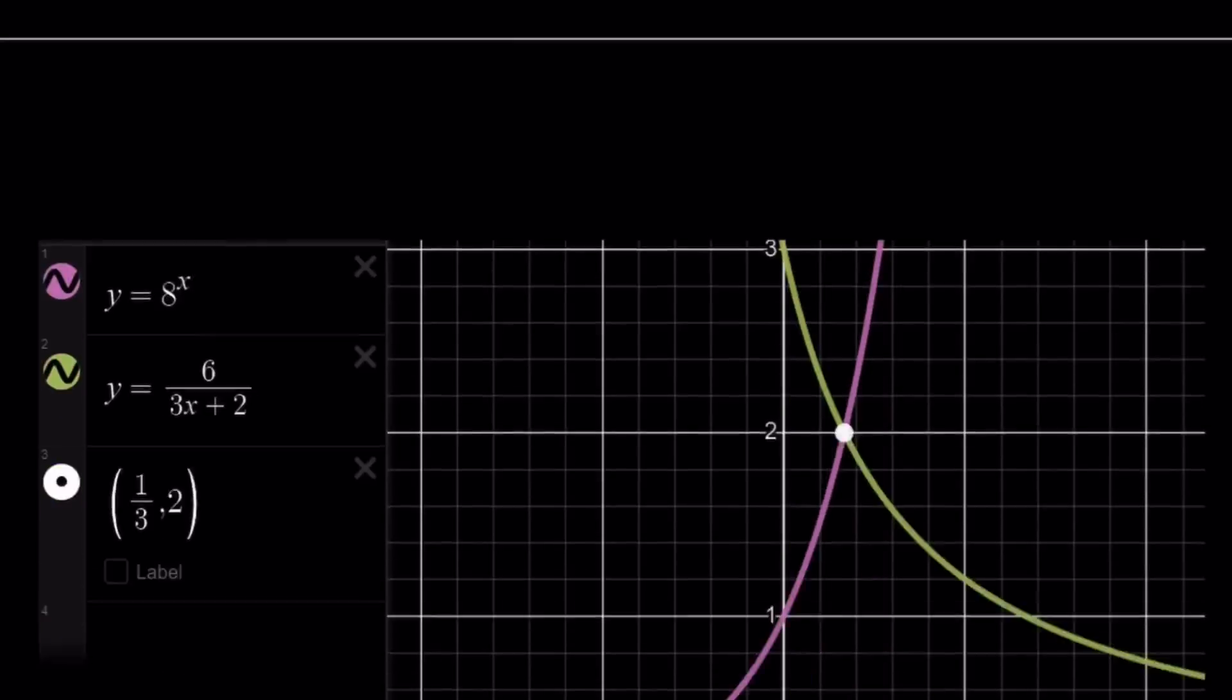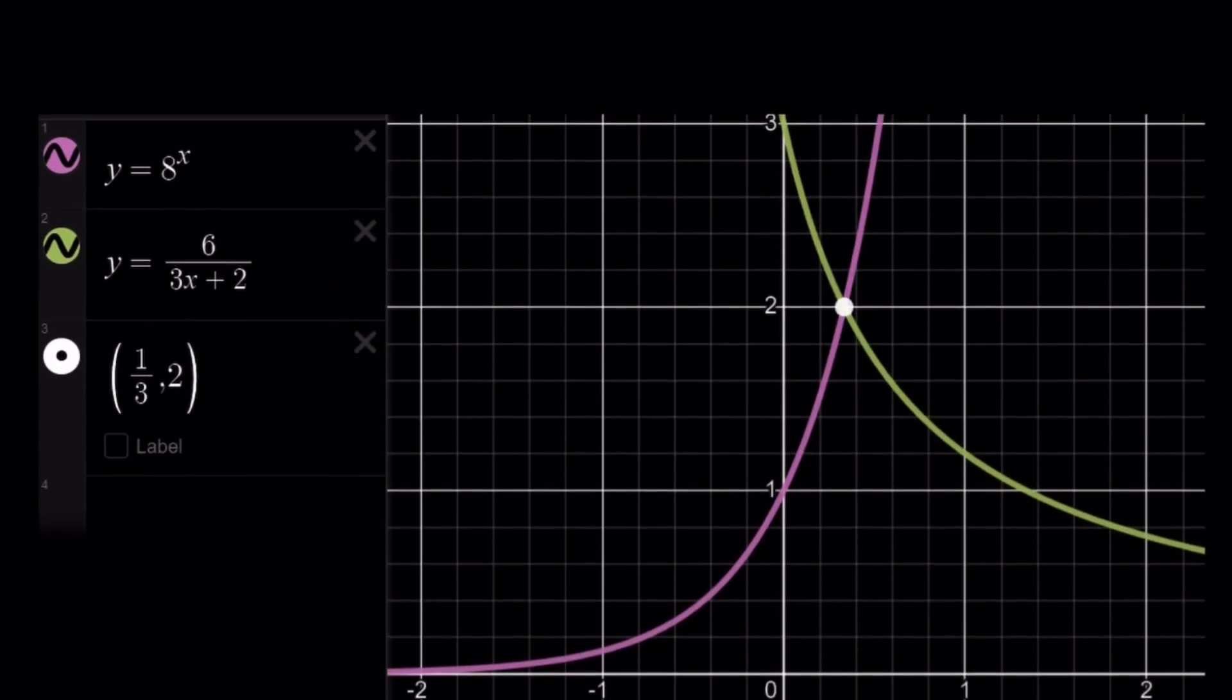Great. So here's the graph of both of these functions. I graphed it together. And you can see here, clearly that the intersection point, well, it's not super clear, but it's not marked, but you can tell, hopefully, that the intersection point, the x axis, is going to be one third. And you can see that here, x equals one third is the only solution to this equation.